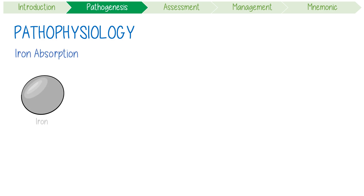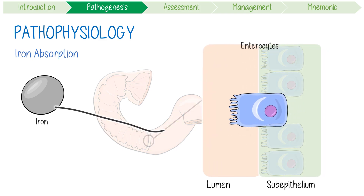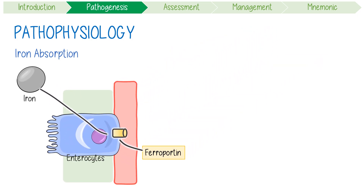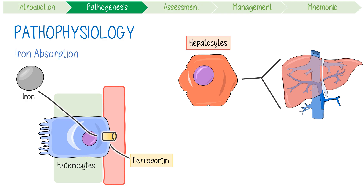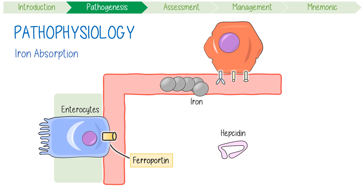To break down its pathophysiology, let's recap iron absorption. Normally, dietary iron is absorbed into the duodenum by gut cells called enterocytes. Iron is then exported into the blood through a protein called ferroportin. The amount of iron absorbed is regulated by hepatocytes from the liver, which detect plasma iron levels using a protein complex made up of subunits including HFE (hemostatic iron regulator), hemojuvelin, and transferrin receptor 2. When iron levels are too high, these proteins tell hepatocytes to produce more hepcidin, which provides negative feedback by inhibiting ferroportin channels from releasing iron into the blood.